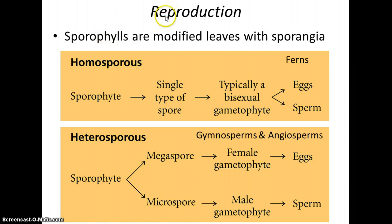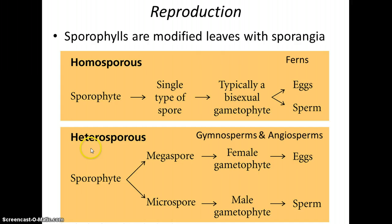Reproduction in ferns, gymnosperms, and angiosperms involves structures called sporophylls — leaves modified to produce sporangia, which produce spores. In the case of a fern, they are homosporous: the sporophyte produces a single type of spore, and that gametophyte has both male and female parts — antheridia producing sperm cells and archegonia producing eggs. Gymnosperms and angiosperms, however, are heterosporous: they have megaspores and microspores, where megaspores produce eggs and microspores produce sperm cells.